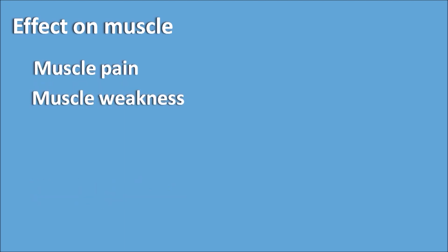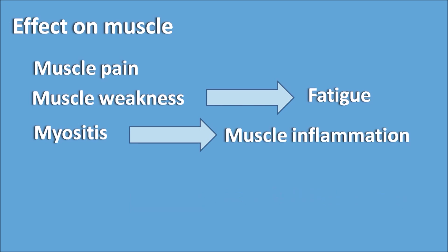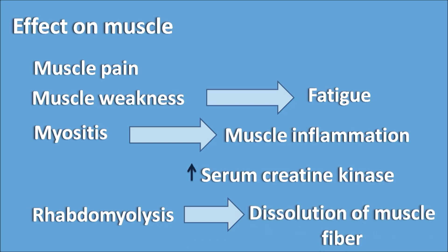The second organ affected by statins is the muscle. Statins can produce muscle pain, muscle weakness resulting in fatigue in patients, and myositis — that is, muscle inflammation. Because of this muscle inflammation, serum creatine kinase levels may be increased in patients treated with statins. Finally, statins can also produce rhabdomyolysis, which is the dissolution of muscle fibers, where muscle fiber is slowly lost with use of these drugs.